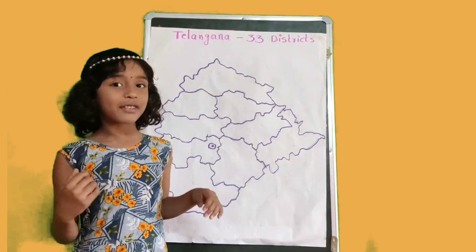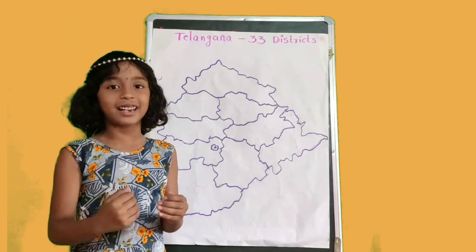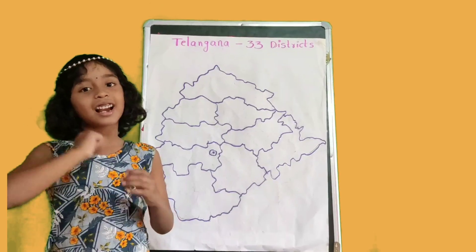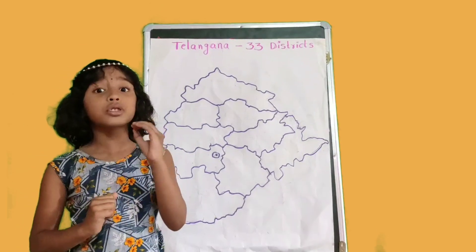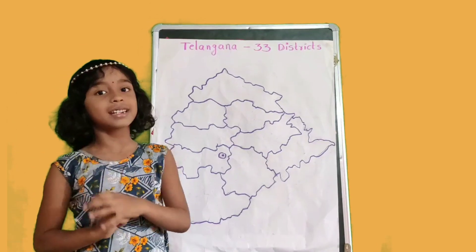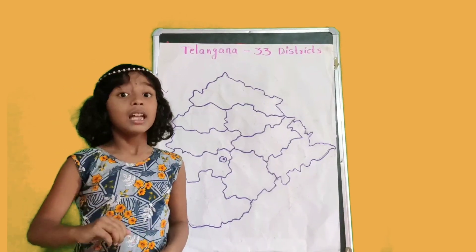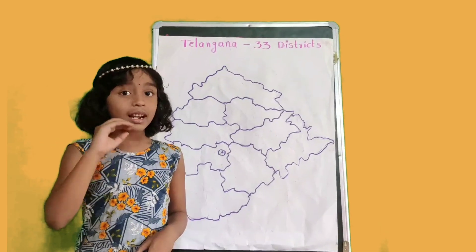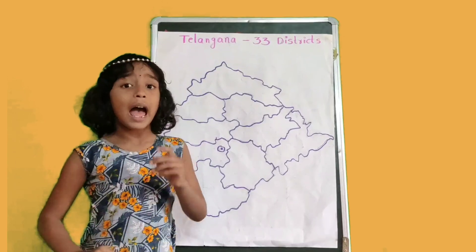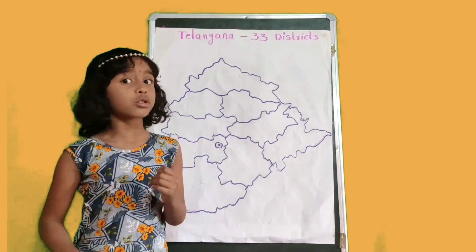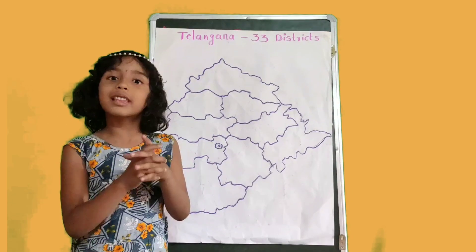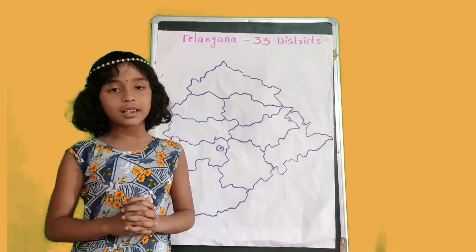Hi friends, today we are going to learn about the 33 districts in Telangana state. Telangana state is in South Central India. Telangana state was formed on June 2nd, 2014. As of 2020, there are a total of 33 districts in Telangana state.